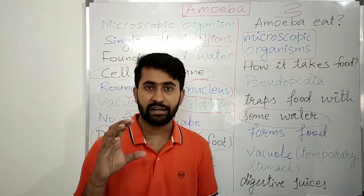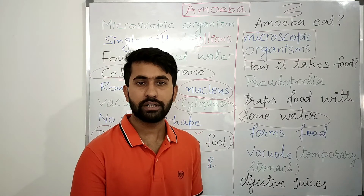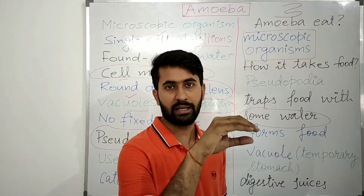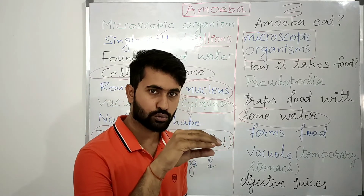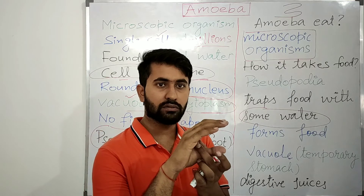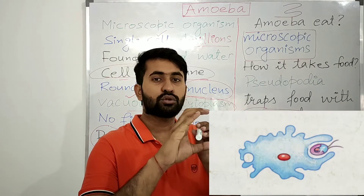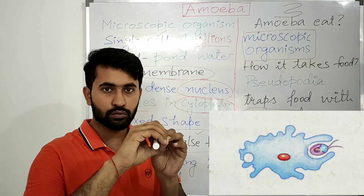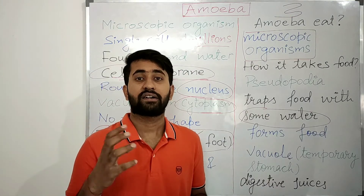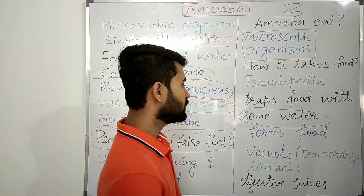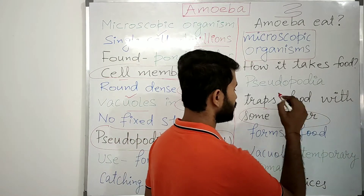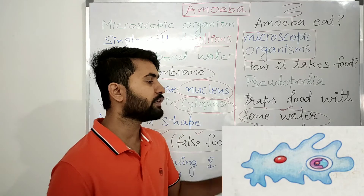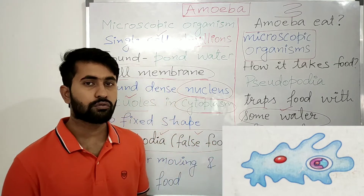When amoeba senses that food is nearby, it forms two finger-like projections called pseudopodia around the food. The two pseudopodia then join around the food, trapping it with some water, and form a food vacuole.